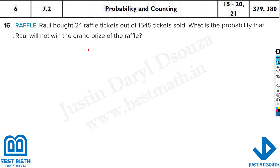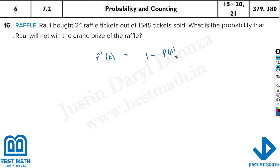The next problem: Roll bought 24 raffle tickets out of 1,545 total tickets sold. What is the probability that Roll will not win the grand prize? This is interesting because they have asked for NOT winning. Not winning is given by the probability complement: P(not A) = 1 minus P(A). So first find the probability he's going to win, then subtract from 100%.